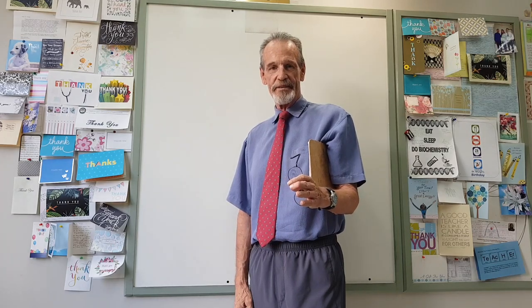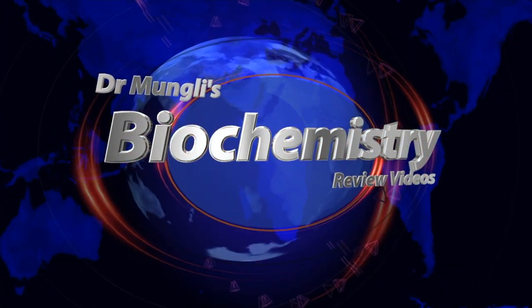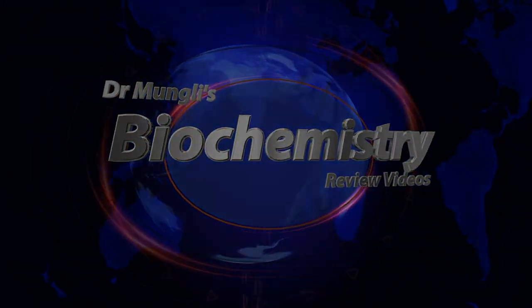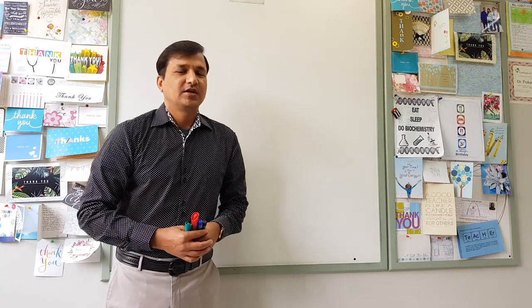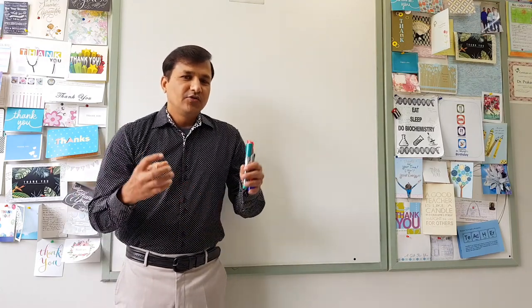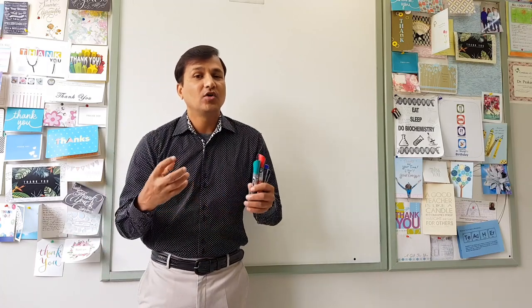I am a gross anatomist, but I'm in Dr. Mungley's office. He's going to talk about the role of vitamin A in vision. Hey everyone, Dr. Mungley here. Let me explain to you what is a visual cycle in this particular video. The visual cycle, especially related with vitamin A — we will be concentrating on the role of rhodopsin in dim light vision or low light vision.